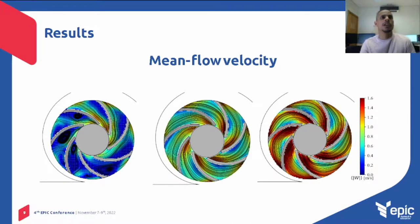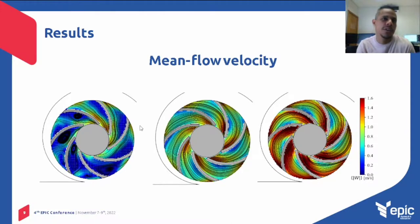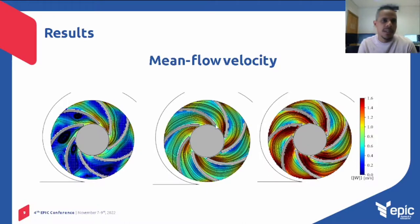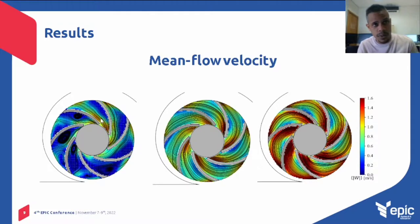Here I present some results of the work. The result of the average velocity field at the different flow rates is shown here for 0.3 BEP, 1 BEP, and 1.5 BEP. As can be seen in the design condition, the velocity vectors follow the geometry of the blades without significant flow separation. As the flow rate decreases to 0.3 BEP, the flow tends to have recirculation zones.